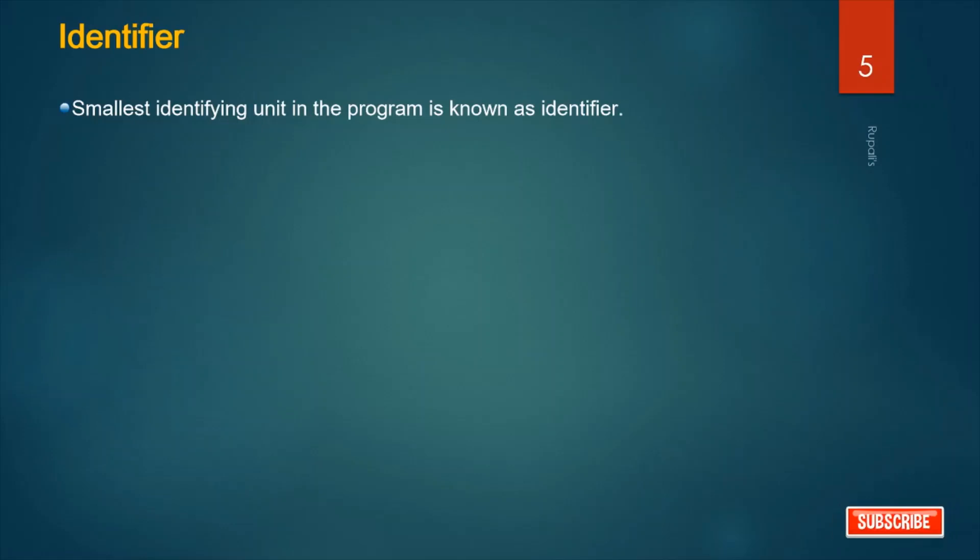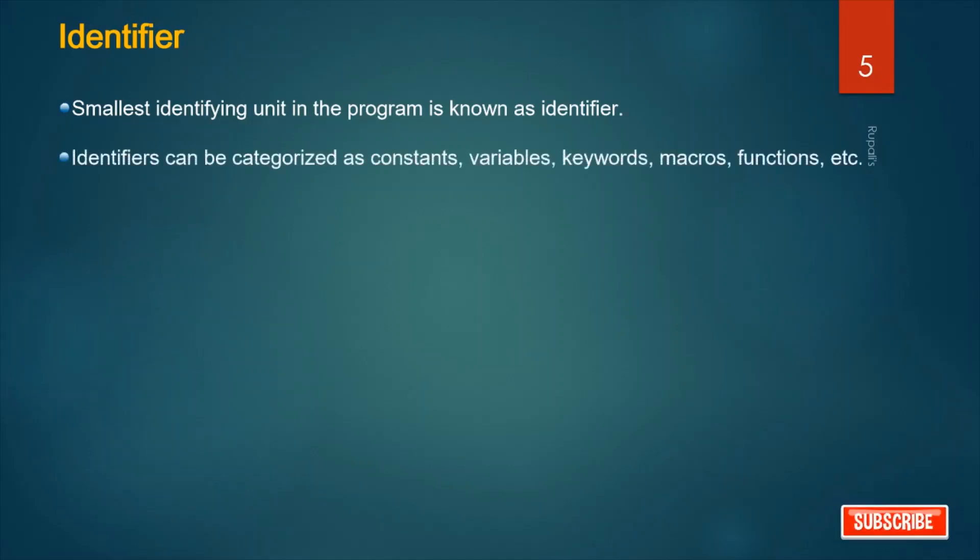Identifier: The smallest identifying unit in the program is known as identifier. Identifiers can be categorized as constants, variables, keywords, macros, and functions.